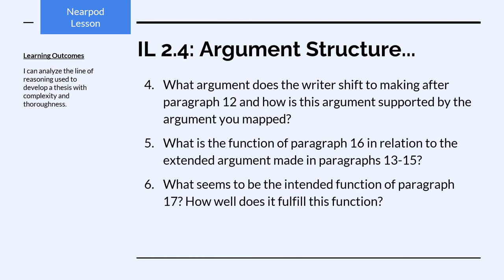Number four: what argument does the writer shift to making after paragraph 12, and how is it supported by the argument you mapped? The argument we mapped contrasted shame and guilt, concluding that guilt is the real emotion we want nonviolent offenders to feel because it motivates reparation. After paragraph 12, paragraph 13 picks up with different ways that can be achieved — different ways we can create punishments that inspire guilt. The function of the rest of the paragraphs is to address what to do now that we understand guilt is what we're really after.